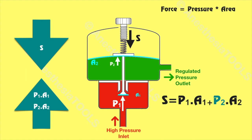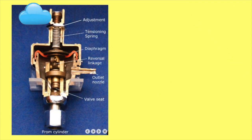Note that if S remains constant, as P1 falls, P2 — the regulator pressure — should rise. So as the cylinder empties, the regulator pressure increases. In fact, as P1 falls, valve V will have to open further to permit the same flow rate. The spring expands, its compression is reduced, and similarly the tension in the diaphragm is reduced. Therefore, as cylinder pressure falls, there is a small reduction in S which partially reverses this effect.